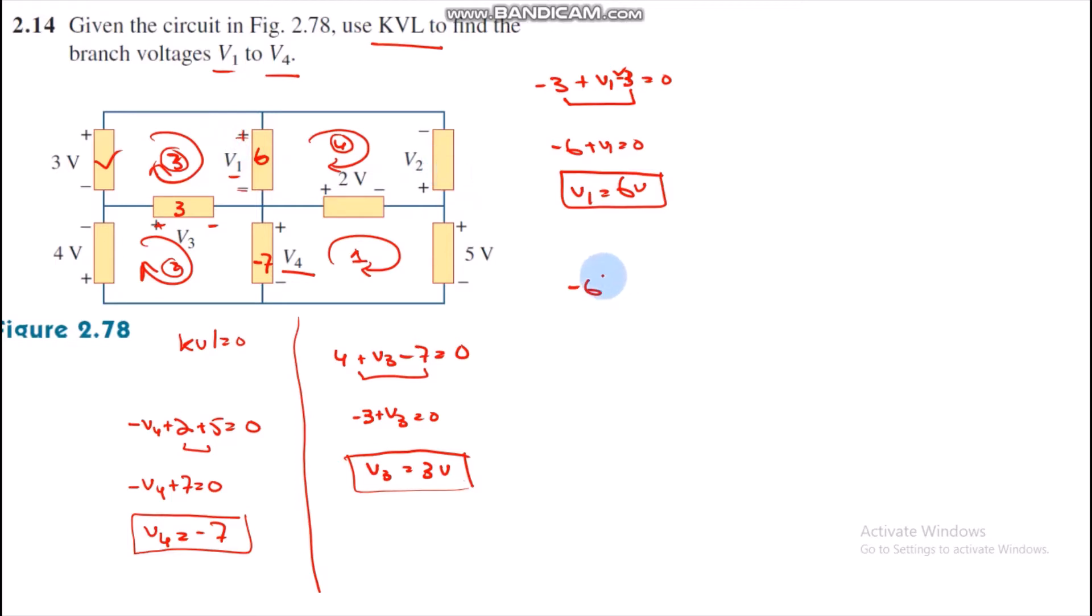And then minus V2 and minus 2 equals zero.